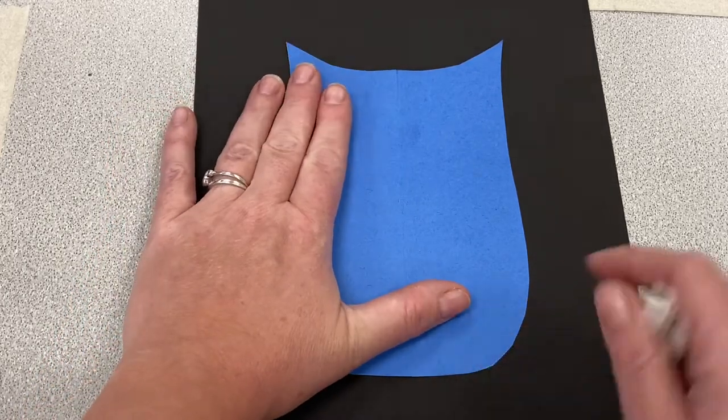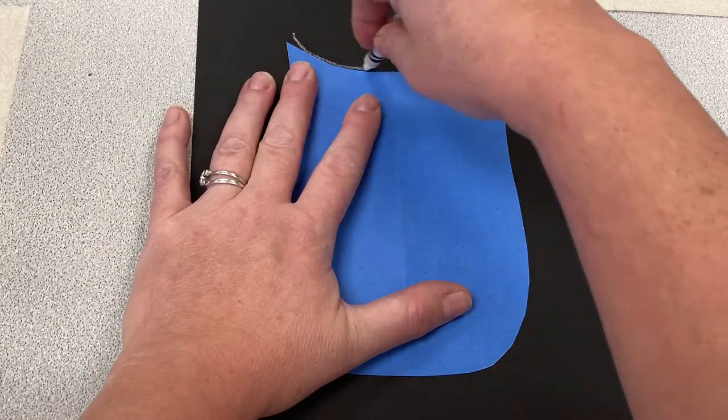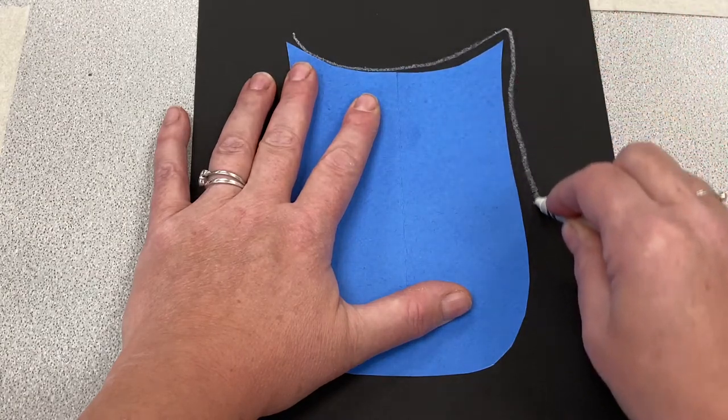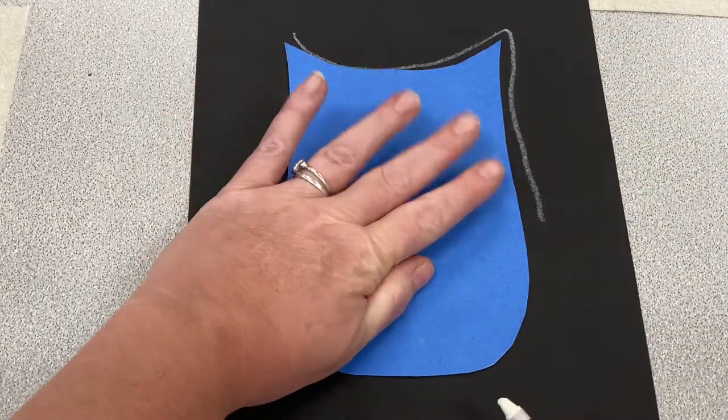Spread your fingers out. This is your helper hand and trace the shape. If it's not perfect, it's okay. I can even turn my paper.